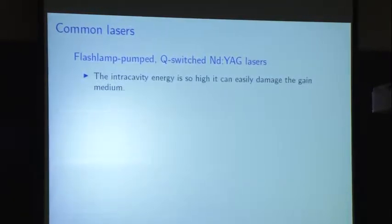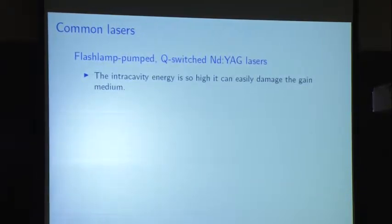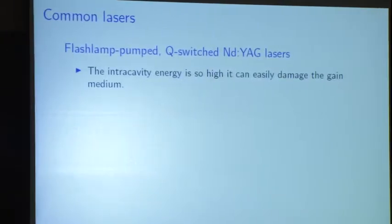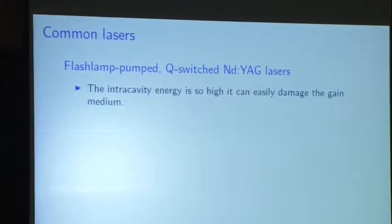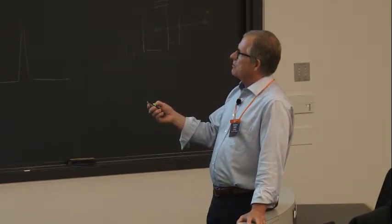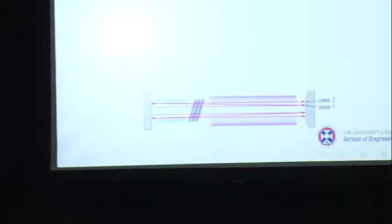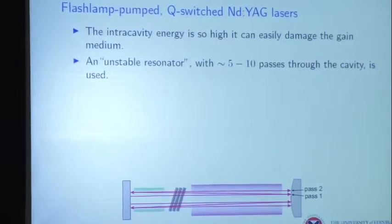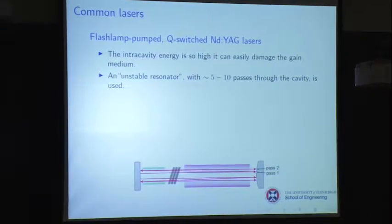The intercavity energy is so high you can easily drill holes in YAG with lasers like this accidentally. If you accidentally retroreflect some of the 1-micron light from outside back into the cavity, the amplifier will amplify that retroreflected light and sometimes destroy the glass. In this case, this is what's called an unstable resonator, which makes about five to ten passes through the cavity. The output coupler is curved because you want the beam to grow with distance as it gets more intense, so it won't drill the rod.